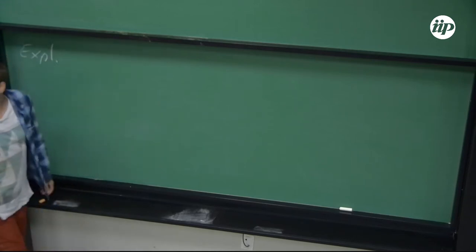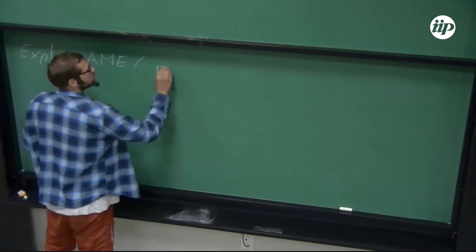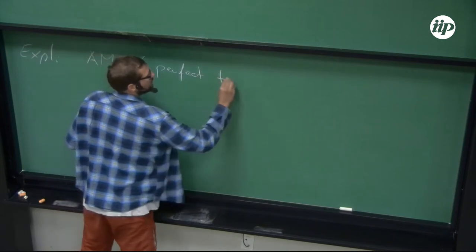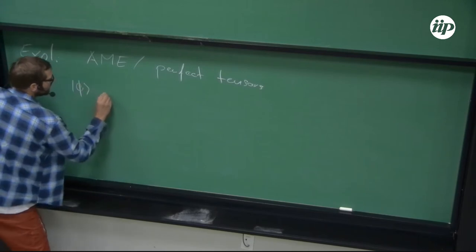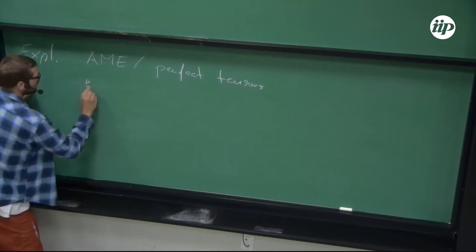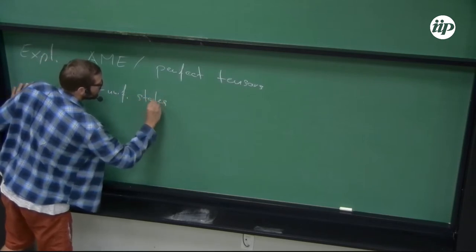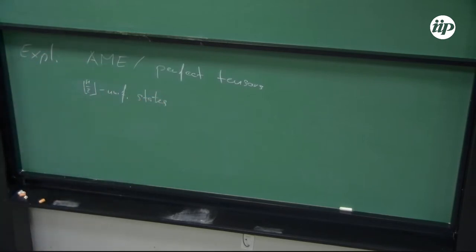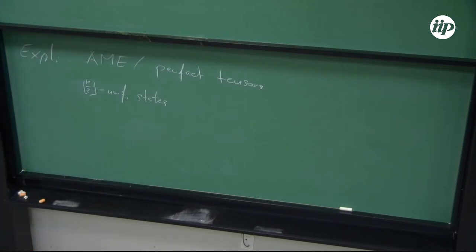There are states known as absolutely maximally entangled, or AME — also known as perfect tensors. These are pure states phi that are basically N-half-uniform states. We have N parties and for every bipartition of this state we see maximum entanglement. One can imagine they might not always exist, and that's really the case.